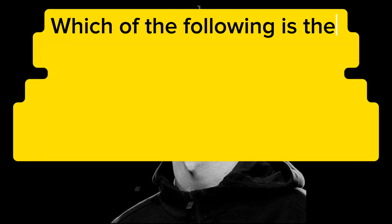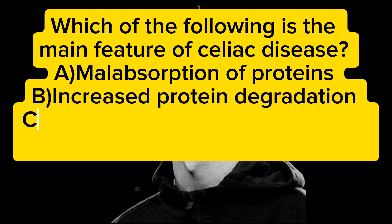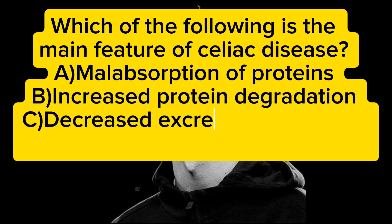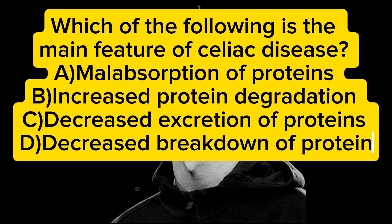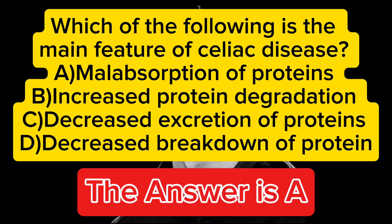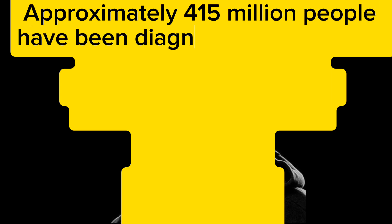Which of the following is the main feature of celiac disease? A) malabsorption of proteins, B) increased protein degradation, C) decreased excretion of proteins, D) decreased breakdown of proteins. The answer is A — malabsorption of proteins.